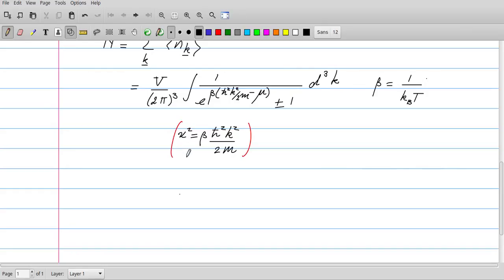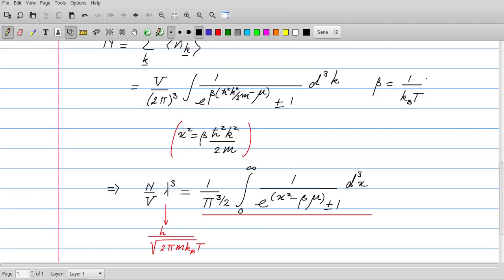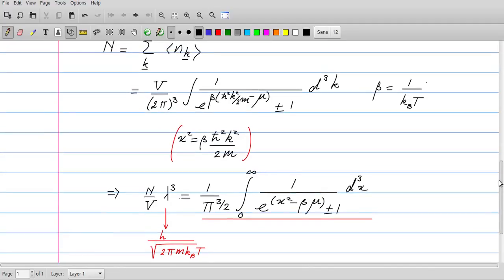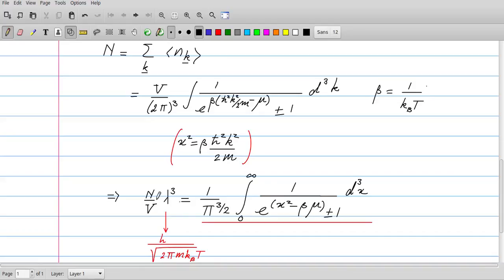The next step is to streamline this integral by introducing a new integration variable called x. We define x such that in the exponent the first term just has the form x². That leads to the following formula: we divide left and right by v, and then we have λ, which is the thermal wavelength ℏ over √(2πmkBT).